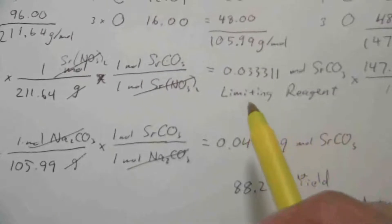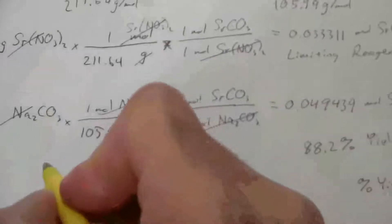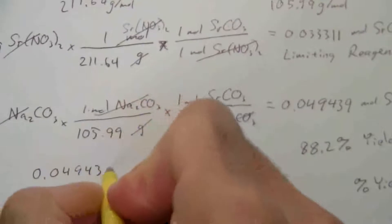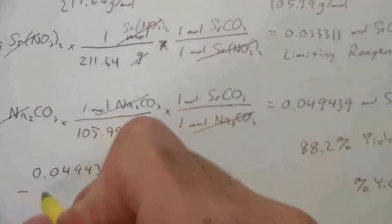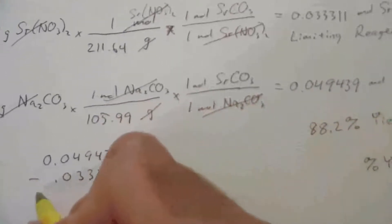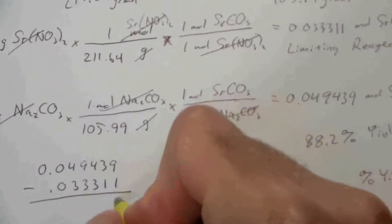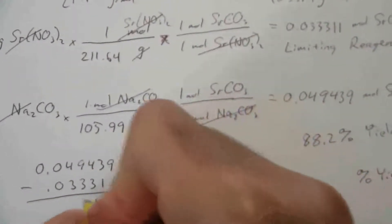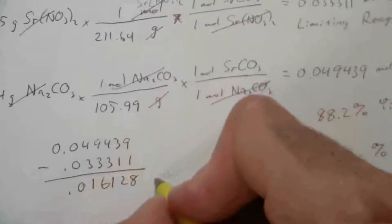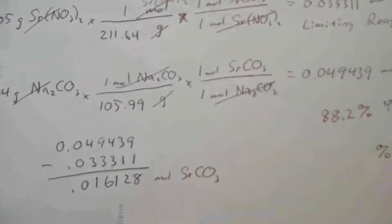I have my limiting reagent subtracted from my reagent in excess, the moles of those. And this is, again, why I include more significant figures, so that I can make sure I don't have rounding errors. So, here we get this amount in excess. Moles of strontium carbonate.